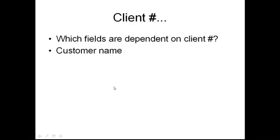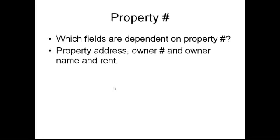We take the first primary key, client number, and ask which fields depend on it. Customer name depends on client number — if I know the client number I also know the customer name. For property number, if I know the property number I know the property address, who owns that property, the owner name, and also the rental price.